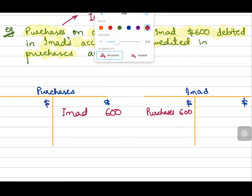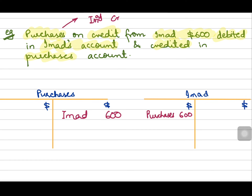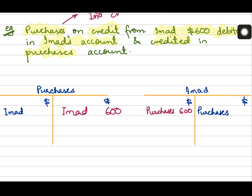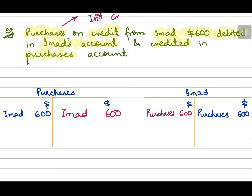How do we correct this error? To correct an error of reversal, you make the double entries on the correct side, just like they should have been made in the first place. So I will debit purchases and credit Imad's account. But with what value? If I use the original value of 600 on both sides, will this correct the error? No, it will not. The 600 on the incorrect side will cancel the 600 on the correct side, making it appear as if no transaction occurred.